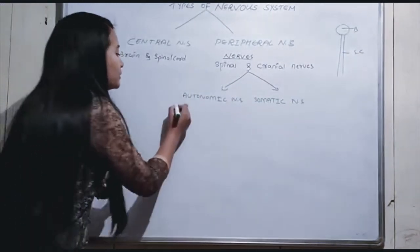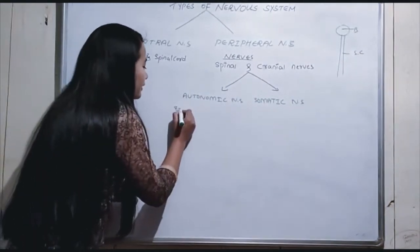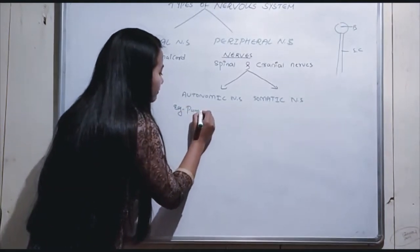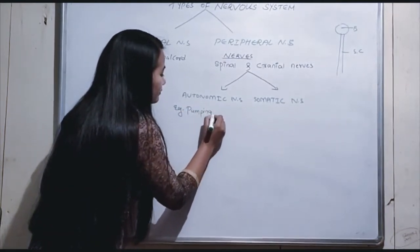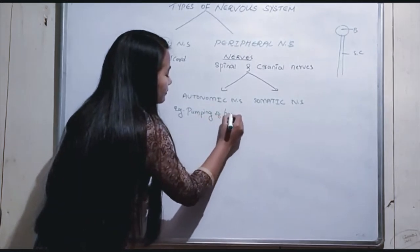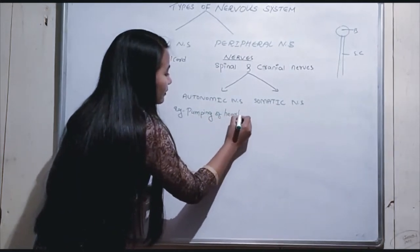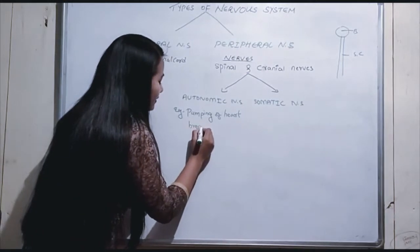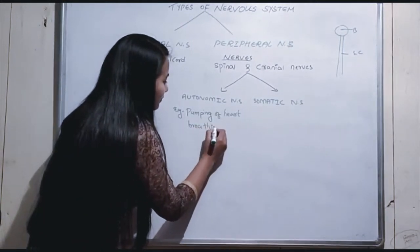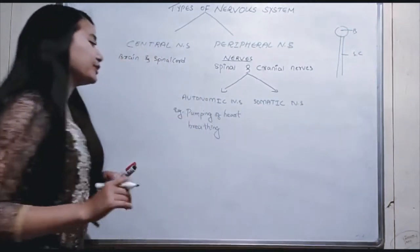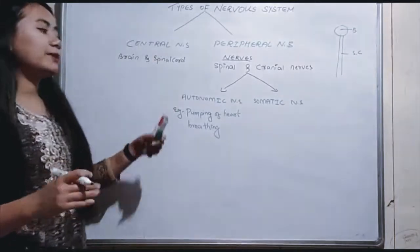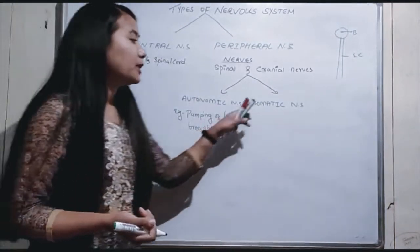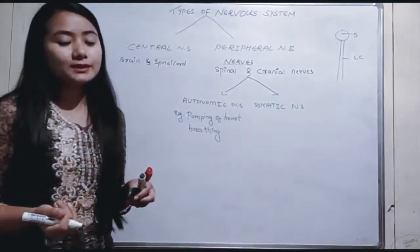Examples of the Autonomic Nervous System include pumping of the heart and breathing — these are automatically controlled by the Autonomic Nervous System.